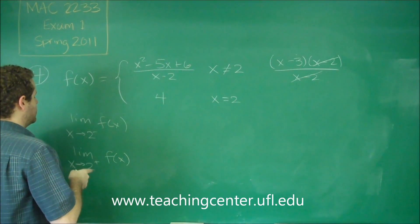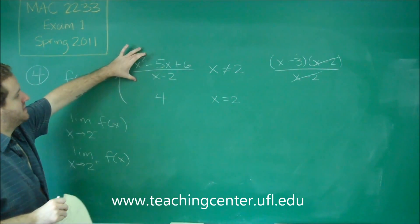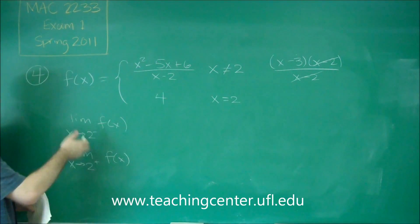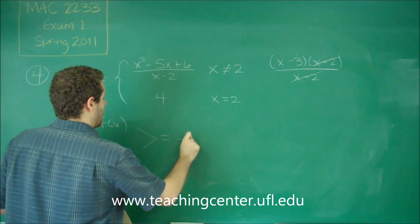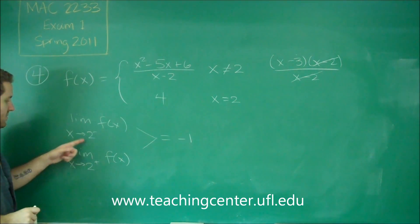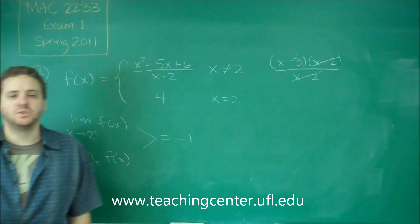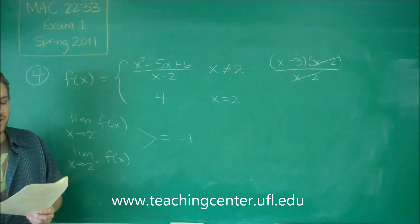Because what we're doing is the limit as we approach 2 from the left and 2 from the right, not of this entire fraction now, but just x minus 3. So no matter what you plug in, in this case, we're going to get negative 1. Because if you plug in 2 from the left or the right, if you subtract 3 from it, it's just 2 minus 3. There's no other conditions there. You just get negative 1.